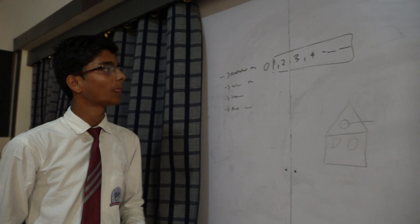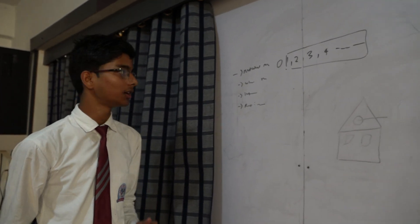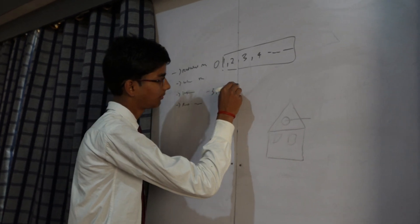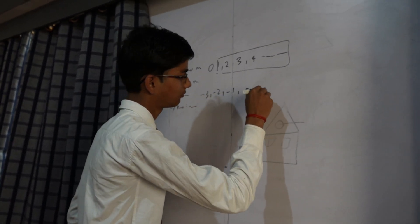Next one is integers. When we included the negative number on the family of natural number is known as integers such as minus 3, minus 2, minus 1, 0, 1, 2, 3, 4.